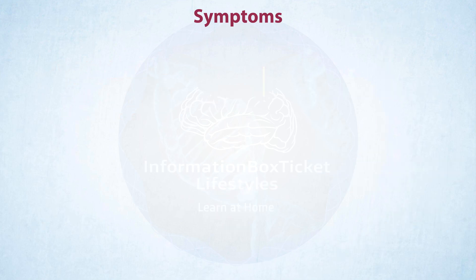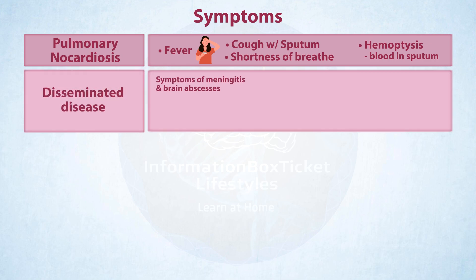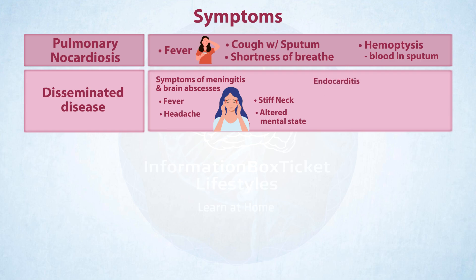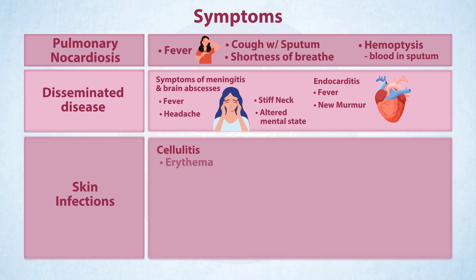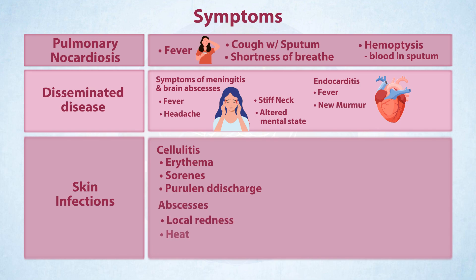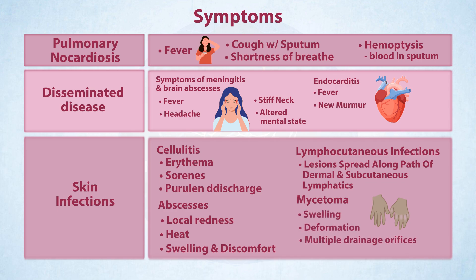Symptoms are determined by the type of illness. Pulmonary nocardiosis causes fever, cough with sputum production, shortness of breath, and hemoptysis or blood in the sputum if the lungs have cavities. Disseminated illness can cause symptoms of meningitis and brain abscesses, such as fever, headache, stiff neck, and altered mental state, as well as endocarditis, which causes fever and new heart murmurs. Cellulitis causes erythema, soreness, and purulent discharge, whereas abscesses can cause local redness, heat, swelling, and discomfort. Lymphocutaneous infections cause lesions to spread along the course of dermal and subcutaneous lymphatics, whereas mycetomas cause swelling, distortion of the afflicted region, and many drainage orifices that exude pus.